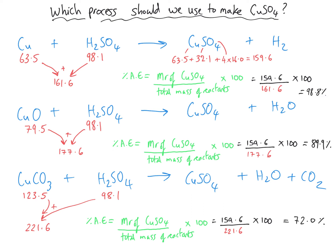At first glance, it looks like we should definitely do the first process because it's got the greatest atom economy and therefore the lowest percentage waste. However, what you might remember from before GCSE is that copper and sulfuric acid actually won't react together. Copper is less reactive than hydrogen, so you won't get a reaction taking place at all. So on paper it looks great, but in practice this reaction just won't happen. So we move on to the next two.